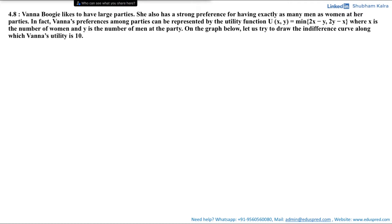In this video we will be solving part A of this question which says Vanna Boogie likes to have large parties. She also has a strong preference for having exactly as many men as women at her parties. Vanna's preferences among parties can be represented by the utility function u(x, y) = minimum of (2x - y, 2y - x), where x is the number of women and y is the number of men at a party.